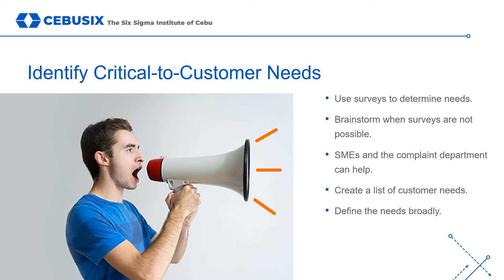Begin the CTQ tree process by creating a list of needs that are critical to the customer, defined in broad terms. The best way to define needs is to directly ask customers for feedback, but time and resources don't always allow for surveys. Teams might use data from recent surveys or feedback forms. In the absence of customer feedback, brainstorm critical needs with employees who have knowledge of the customer — such as subject matter experts from sales, customer service, and complaint departments. You can also begin a CTQ tree with the outputs of your SIPOC diagram.